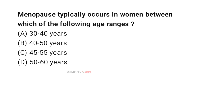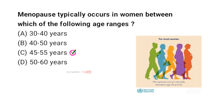Menopause typically occurs in women between which of the following age ranges? A. 30 to 40 years. B. 40 to 50 years. C. 45 to 55 years. D. 50 to 60 years. And the correct answer is C. 45 to 55 years. According to the World Health Organization, the age at which natural menopause occurs is generally between 45 and 55 years for women worldwide.